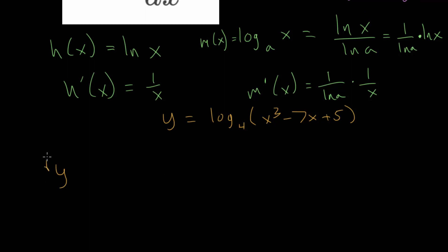So let's take the derivative of y with respect to x, which we can also just write as y prime. We have the derivative of our outer function, which we know is 1 over whatever the input is.